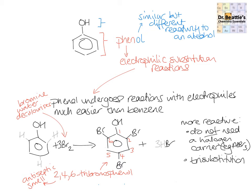The reason you get substitution at positions 2, 4, and 6 is because the phenol group is what's known as an electron-donating group. These groups direct substitution to the 2, 4, or 6 positions when something undergoes electrophilic substitution. We'll look at this in more detail in the video titled 'Electron-donating groups and electron-withdrawing groups', but just take away that phenol is an electron-donating group.